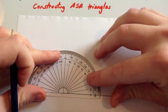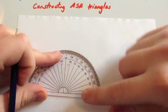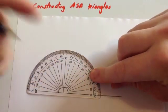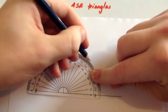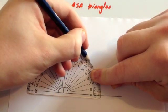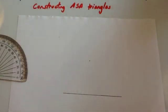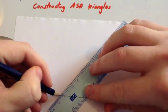Put the zero on the line — make sure it's absolutely perfect. Measure around to 50 degrees. Zero is here on the inside, so we go around to 50, exactly there. Get your ruler and draw a nice straight line through that point.